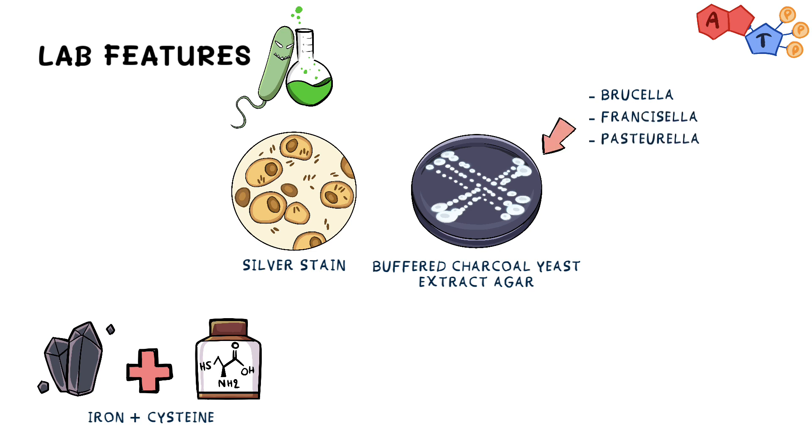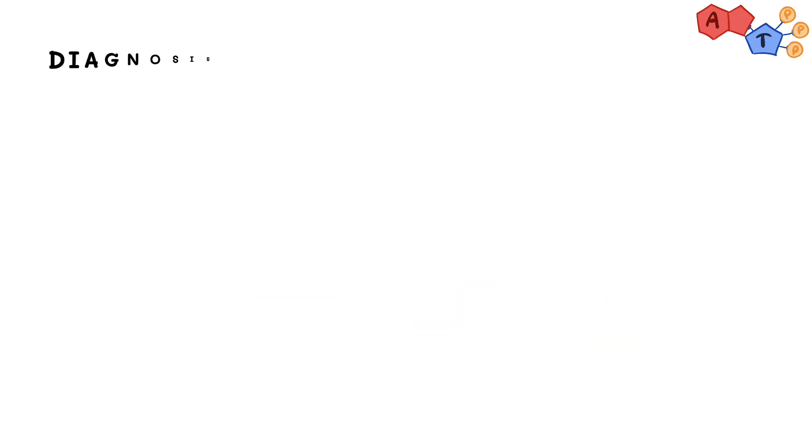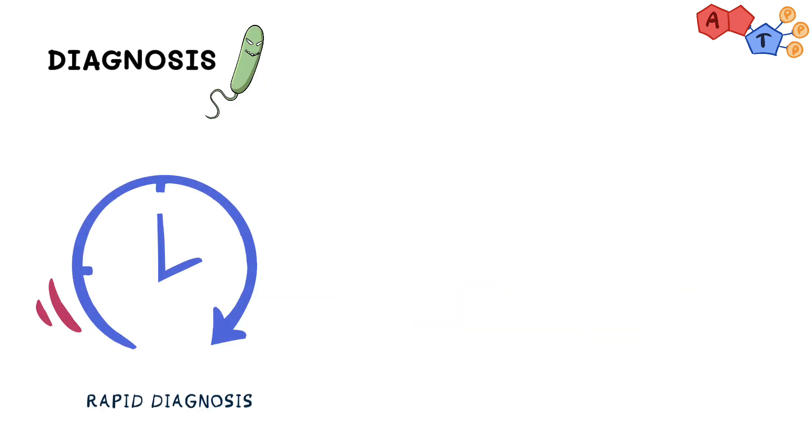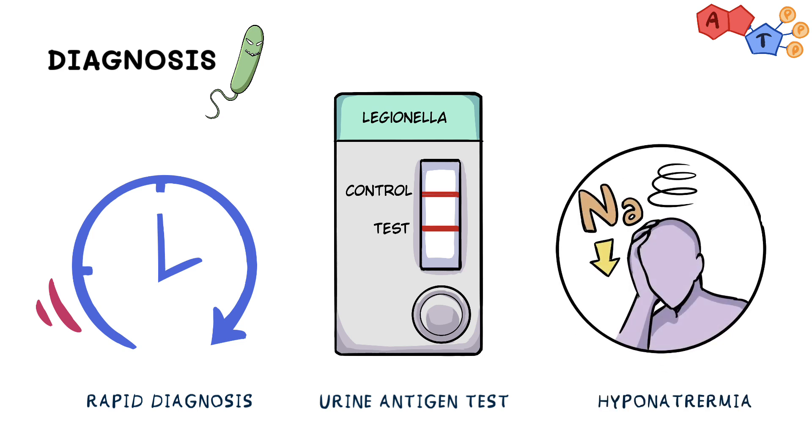We supplement this agar with antibiotics and silver stain. The antibiotics prevent other organisms from growing and silver stain helps visualize Legionella. If an immediate diagnosis is required and there is no time for culturing, then a urine antigen test can be done for rapid diagnosis. Also, hyponatremia can be a helpful clue in patients with suspected Legionella infection.